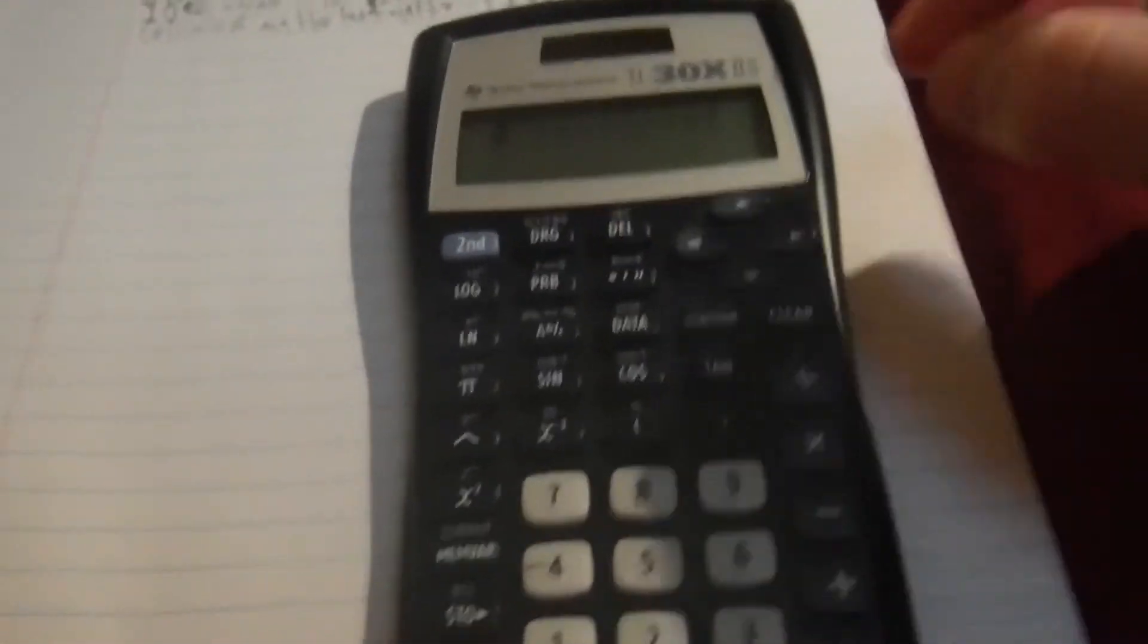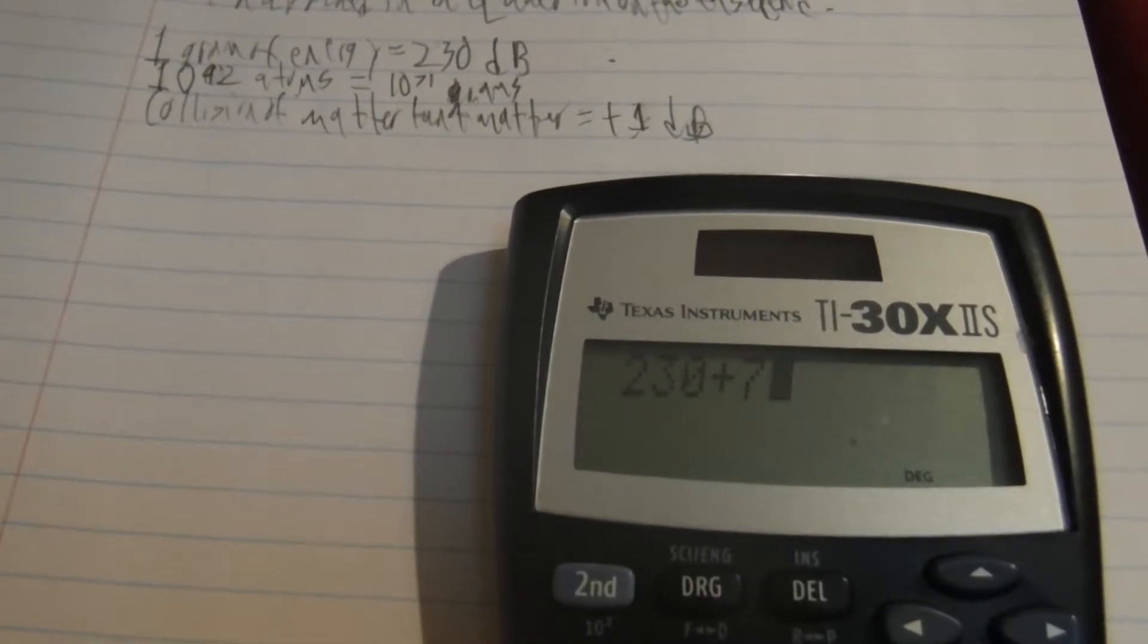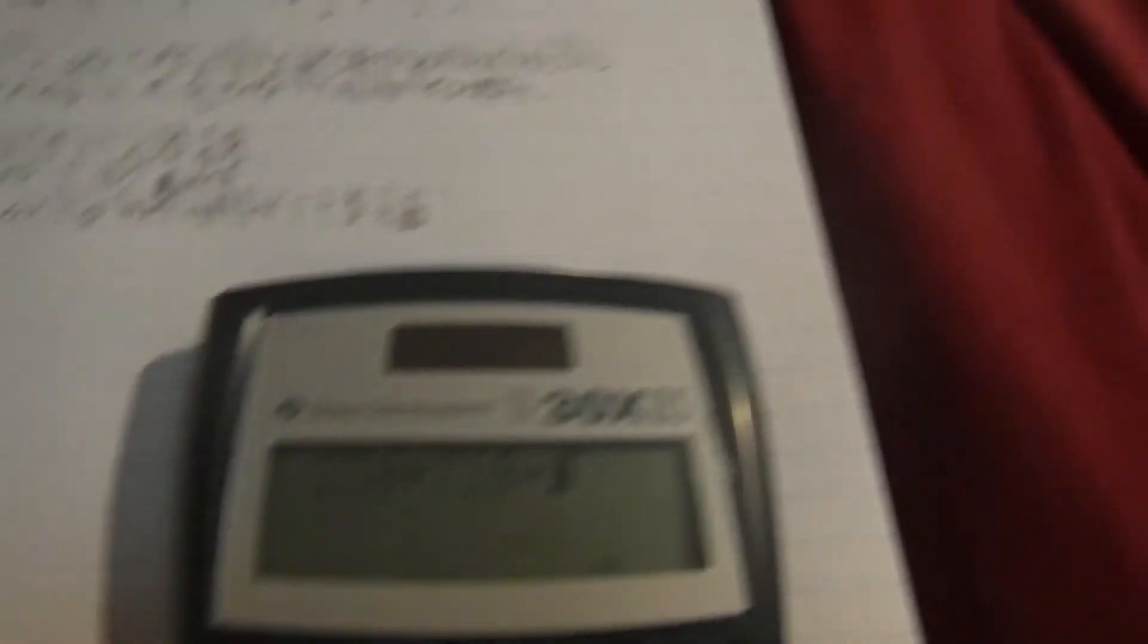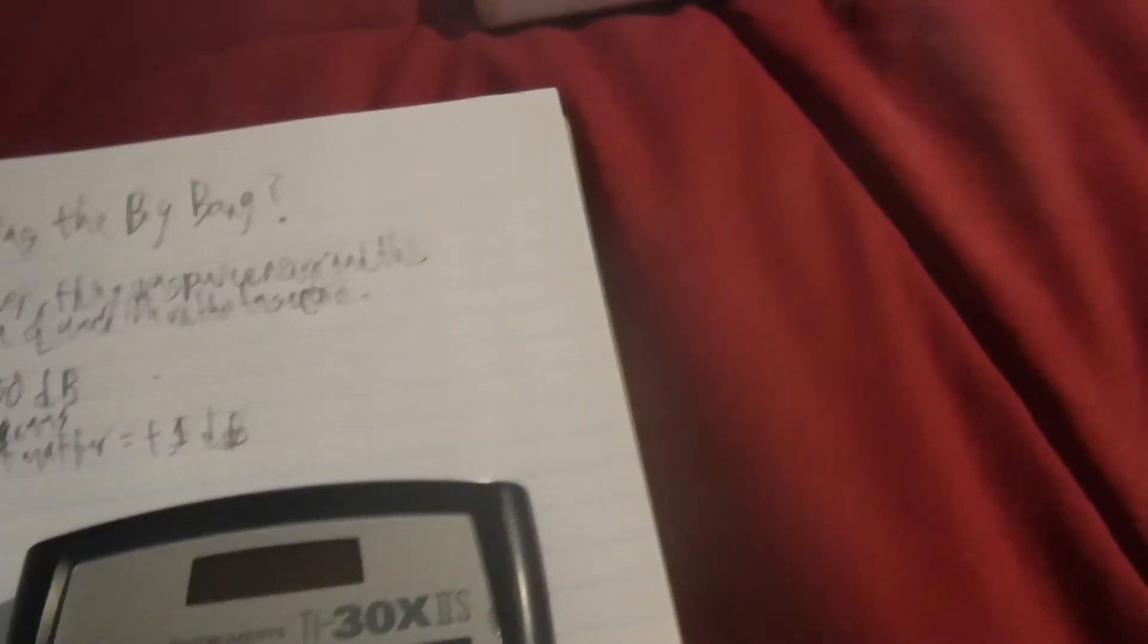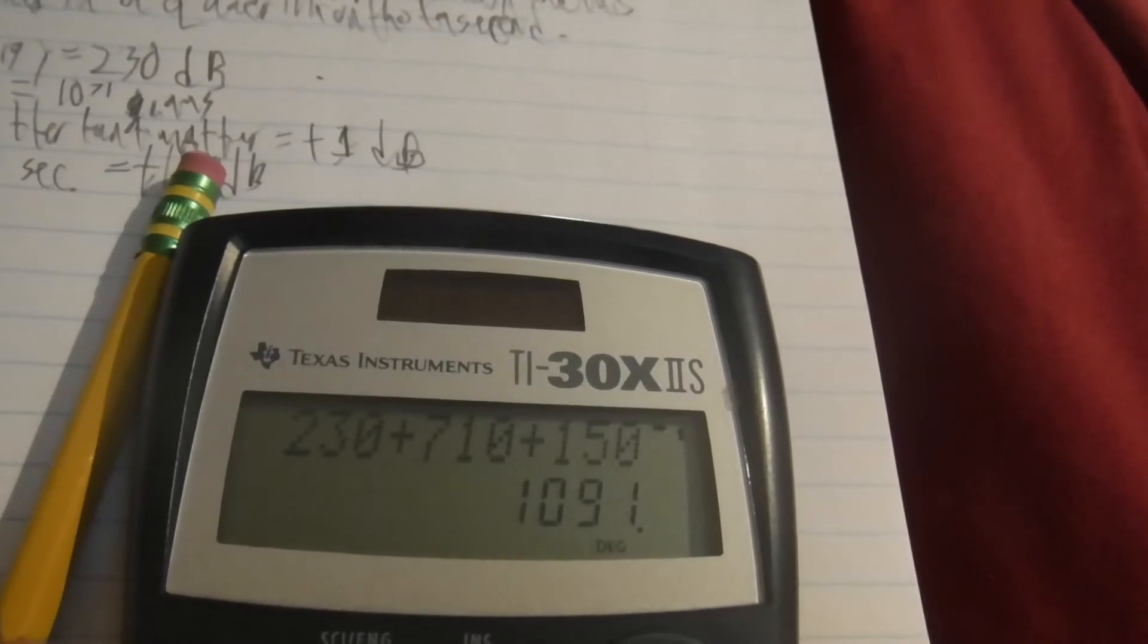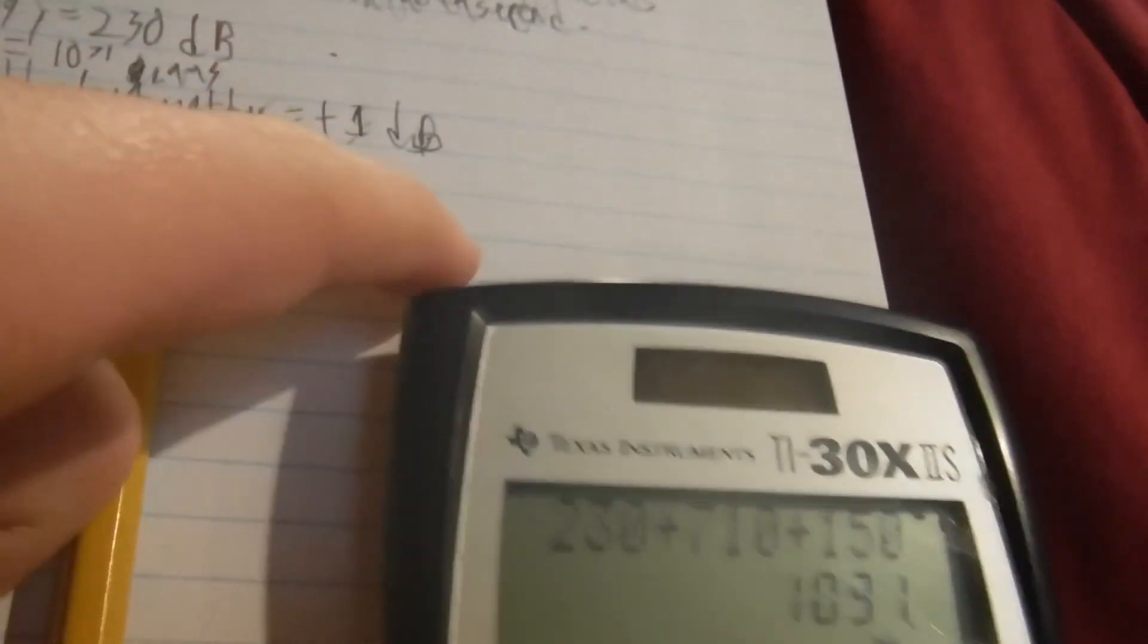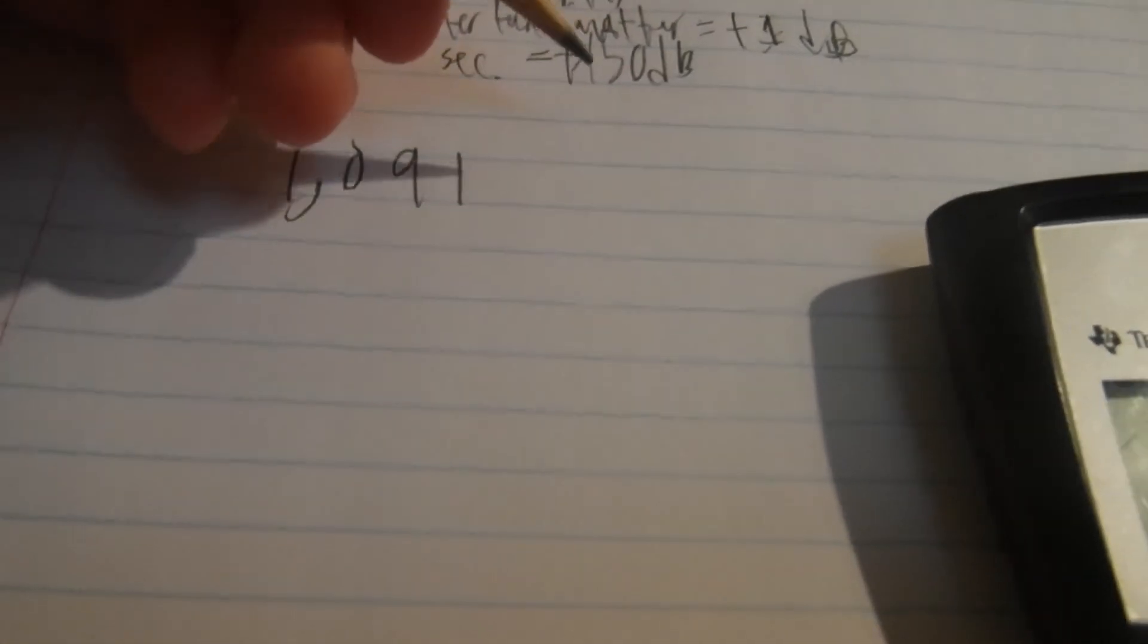So now it's time for the calculation. 230 plus 710. Plus this. So I'm going to add 150 plus 1. So the Big Bang was 1091 decibels.